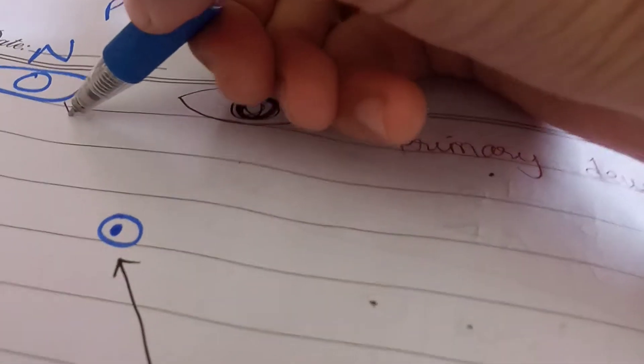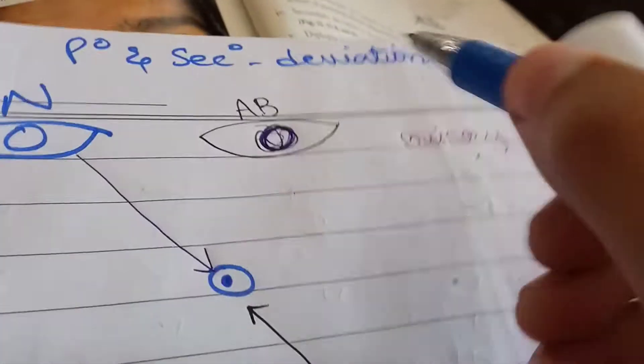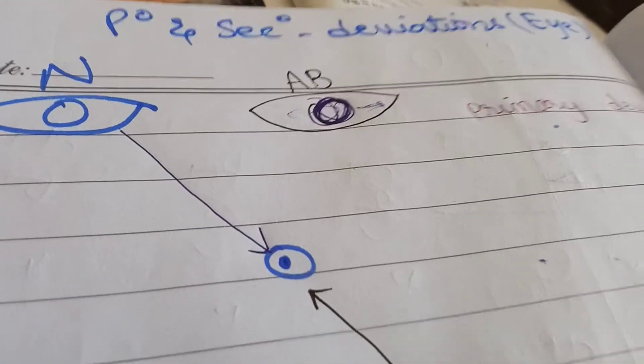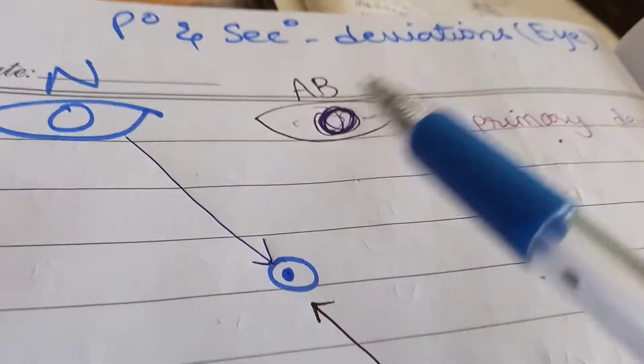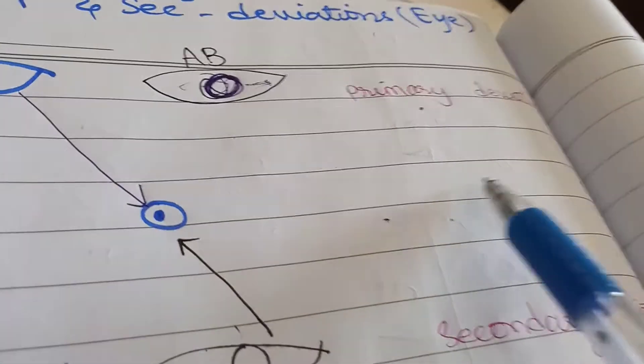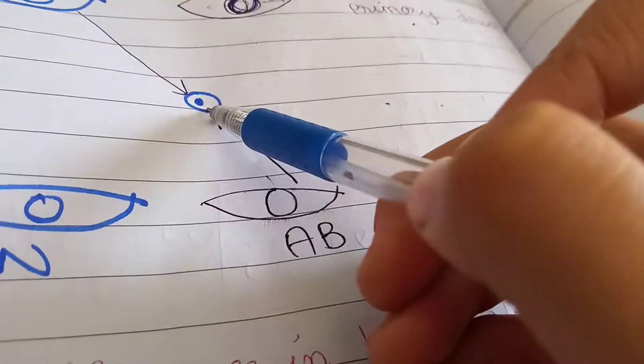We ask the patient that the normal eye fixates. When the normal eye fixates, the affected eye deviates — but very little. This is called primary deviation: the deviation of the affected eye when the normal eye is fixating in the primary position, looking at a fixed point.